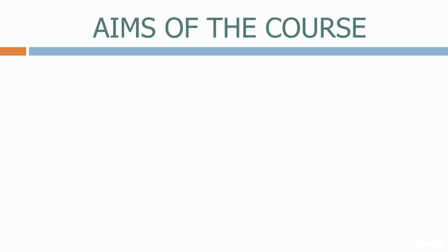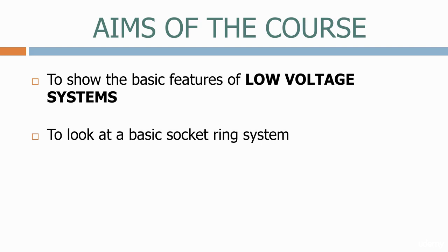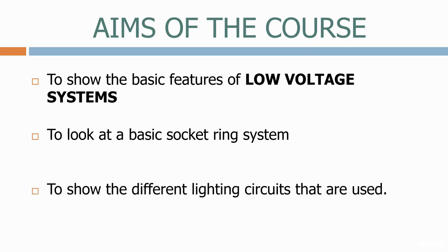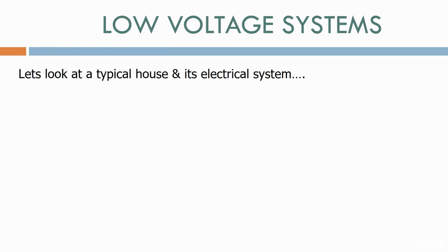The aims of the course today are to show the basic features of low voltage systems, to look at a basic socket ring system, and to show the different lighting circuits that are used. Let's look at a typical house and its electrical system.